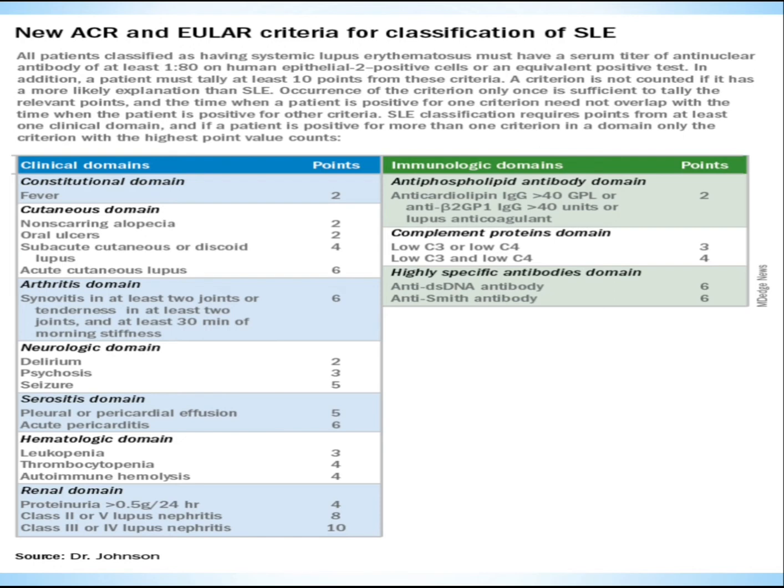Immunologic domain — antiphospholipid antibody subdomain: anti-cardiolipin IgG greater than 40 GPL, or anti-beta-2 GP1 IgG greater than 40 units, or lupus anticoagulant positive: 2 points. Complement proteins subdomain: low C3 or low C4 gives 3 points; low C3 and low C4 gives 4 points. Highly specific antibodies subdomain: anti-double-stranded DNA antibody or anti-Sm antibody each give 6 points.